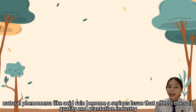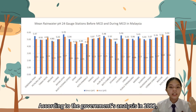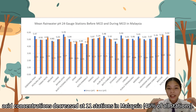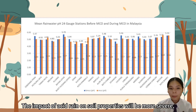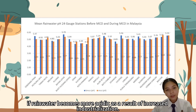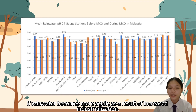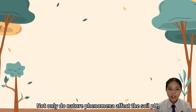In Malaysia, natural phenomena like acid rain have become a serious issue that affects soil quality and the plantation industry. According to the government's analysis in 2022, acid concentration decreased at 11 stations in Malaysia, which is approximately 46% of all stations. The impact of acid rain on soil properties will be more severe if rainwater becomes more acidic as a result of increased industrialization.